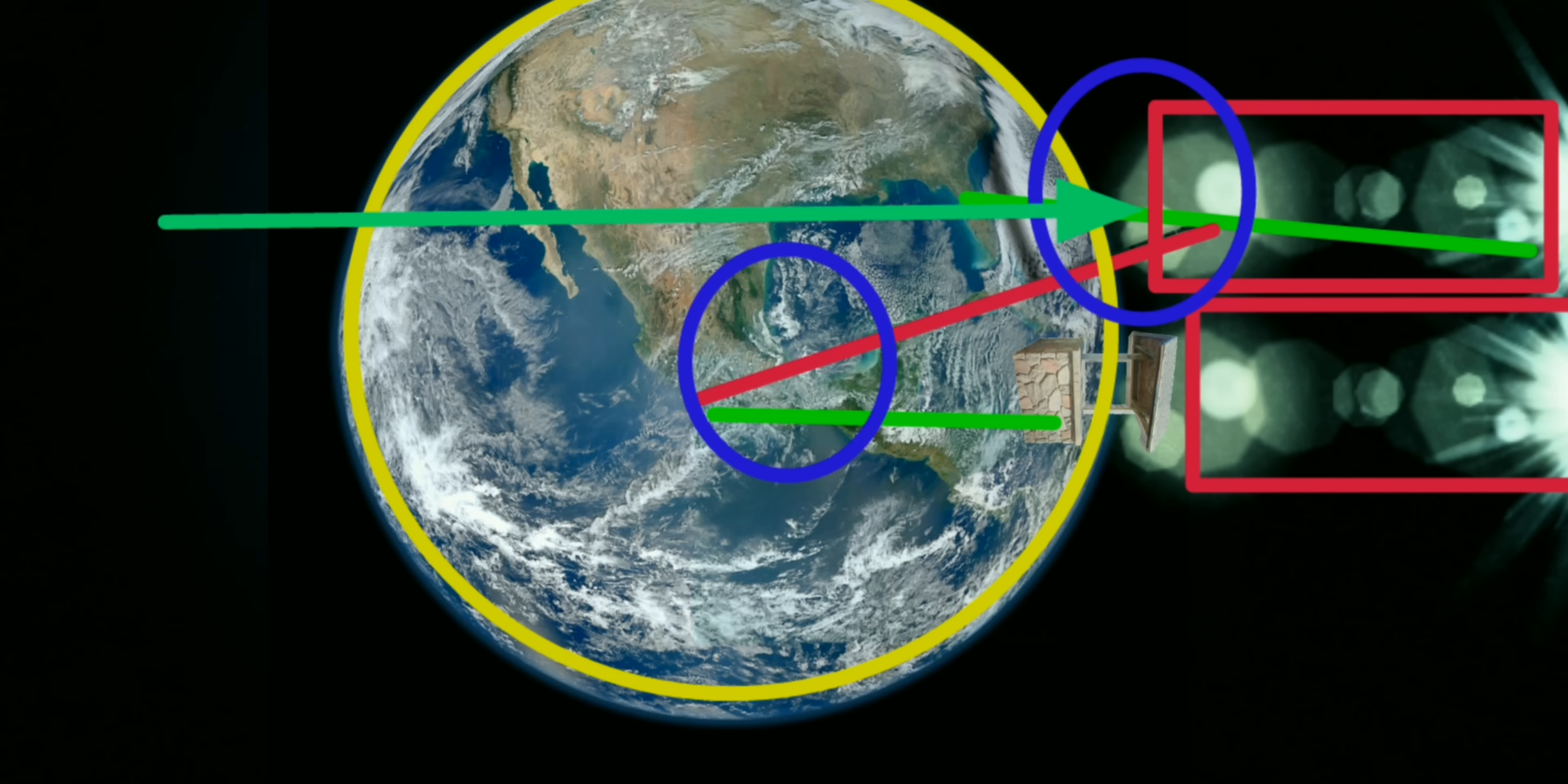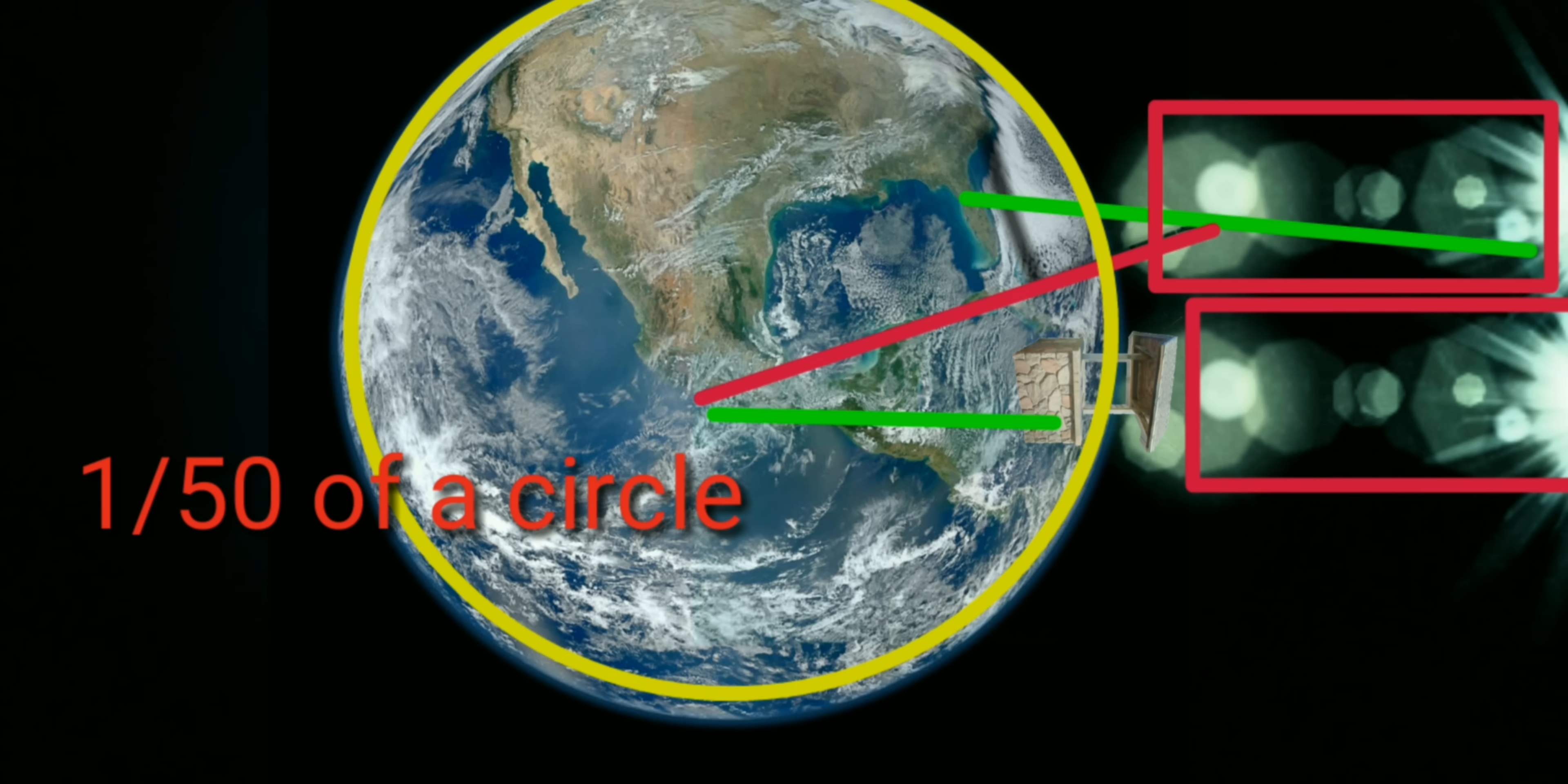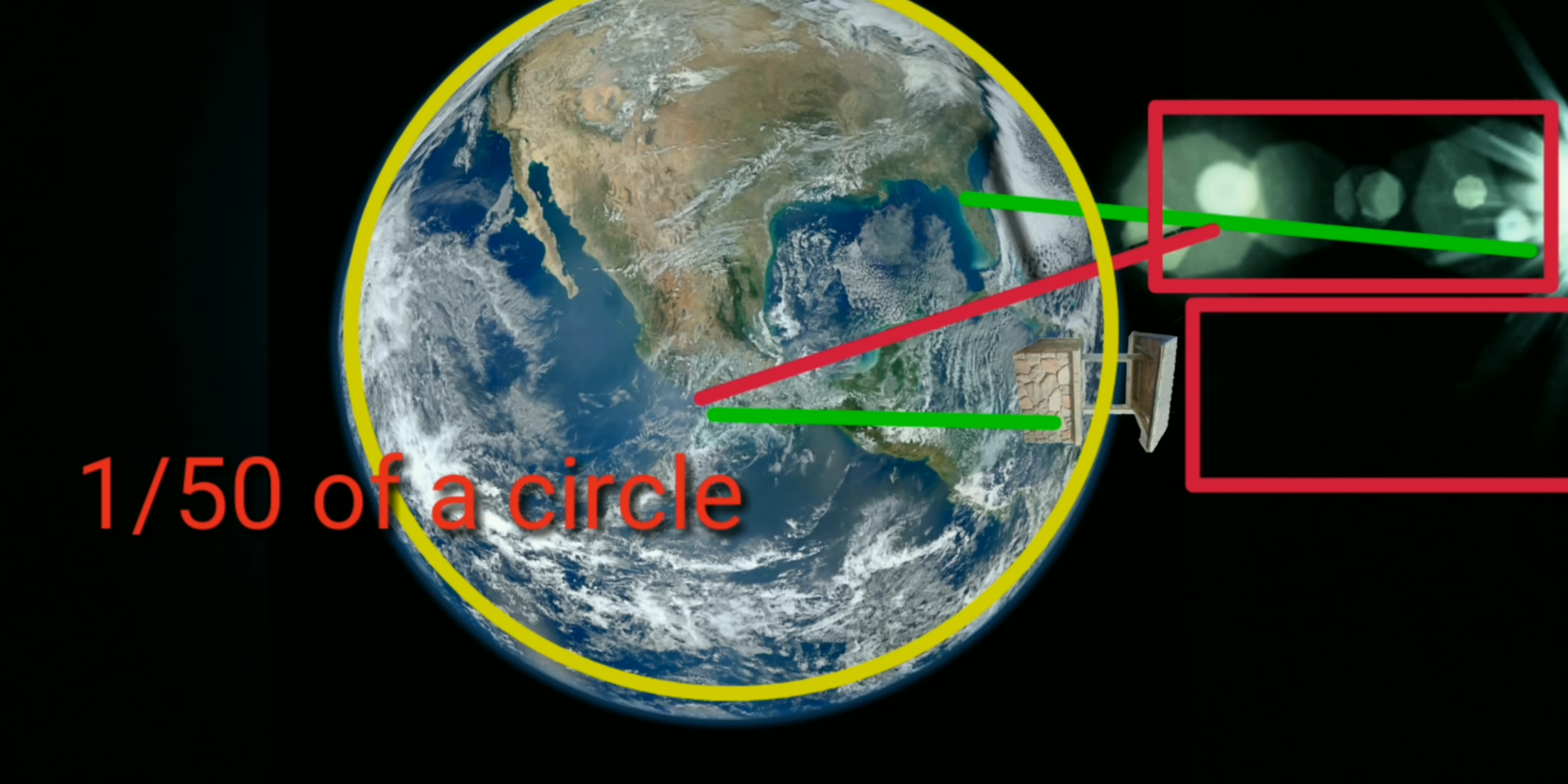Similarly here, sun rays are the parallel arm which is cut by Earth's surface, and the shadow angle and Earth radius angle are the alternate interior angles. That's why these angles are equal.